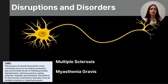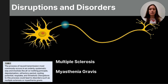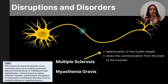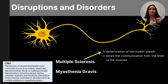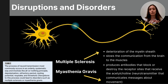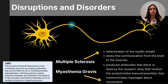Two disruptions can happen in the neural communication process, caused by autoimmune disorders: multiple sclerosis (MS) and myasthenia gravis (MG). These disorders impact muscular control and reaction time. Multiple sclerosis is caused by the deterioration of the myelin sheath — the fatty tissue that insulates the axon — which leads to the slowing of messages from the brain to the muscles. Myasthenia gravis produces antibodies that block or destroy the receptor sites on the dendrites, specifically those that receive acetylcholine, the neurotransmitter responsible for messages about movement.